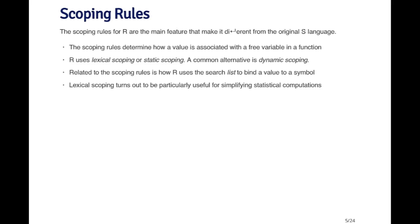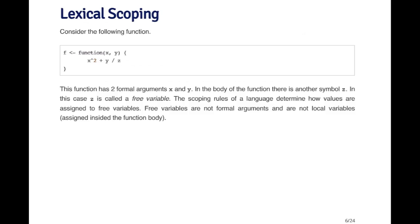Lexical scoping is particularly useful for simplifying statistical calculations. Take a look at the following function. It has two formal arguments, x and y. The body squares x and adds the ratio of y divided by z. X and y are clear, but where did z come from? X and y are formal arguments, but z is what's called a free variable, because it wasn't defined in the function header. The question is: what value do we assign to z, assuming values were inputted for x and y? The scoping rules of the language determine how we assign a value to a free variable like z.